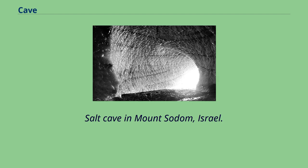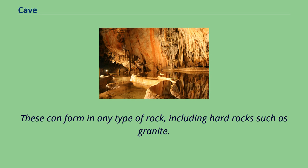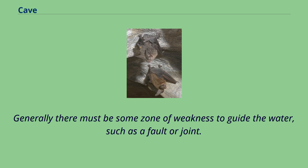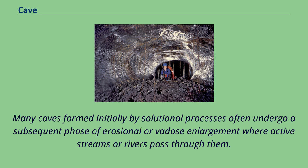Salt Cave in Mount Sodom, Israel. Corrasional or erosional caves are those that form entirely by erosion by flowing streams carrying rocks and other sediments. These can form in any type of rock, including hard rocks such as granite. Generally there must be some zone of weakness to guide the water, such as a fault or joint. A subtype of the erosional cave is the wind or eolian cave, carved by wind-borne sediments. Many caves formed initially by solutional processes often undergo a subsequent phase of erosional enlargement where active streams or rivers pass through them.